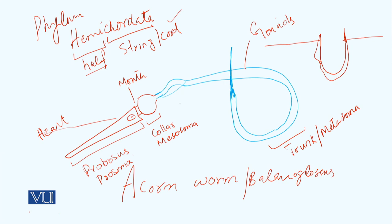In hemicordates, half of the chordate characteristics exist, like nerve chord or notochord. As you can see, this is a diagram of an acorn worm in which you see the head part called proboscis, the swollen part called collar, and the end part which is the trunk region. And the gonads exist for the purpose of fertilization and to carry their generations.